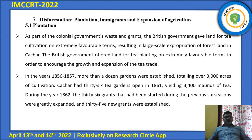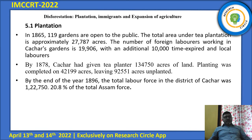Regarding deforestation, plantation, immigrants, and expansion of agriculture: plantation was a move by the British government to enhance the revenue of the district. They introduced tea plantation and accordingly gave federal land grants on favorable terms to the tea planters. By 1865, almost 119 gardens were opened to the public. The total area of tea plantation is approximately 27,787 acres. By the end of 1896, the total labor force in the district of Kathar was 1,22,750 — which is 20% of the total Assam labor force.